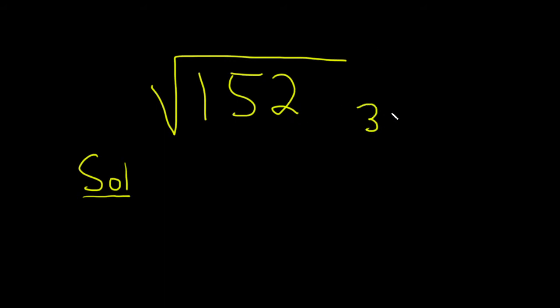So it turns out that 38 times 4 is going to give us 152. So mentally, the way you do that is 4 times 30 is 120, 4 times 8 is 32, 32 plus 120 is 152.